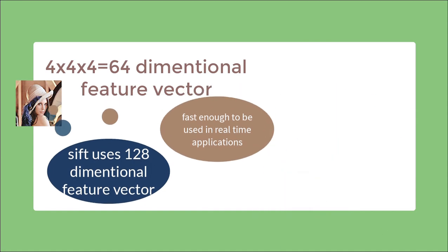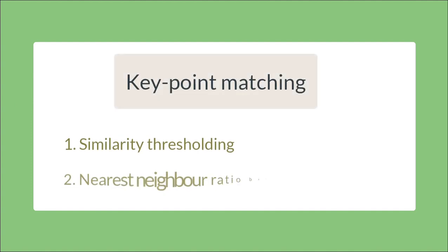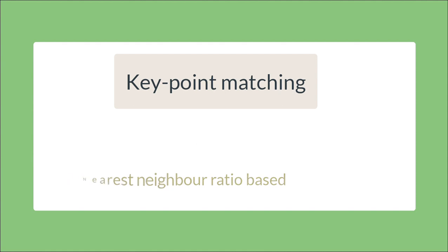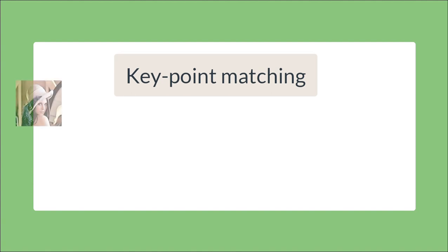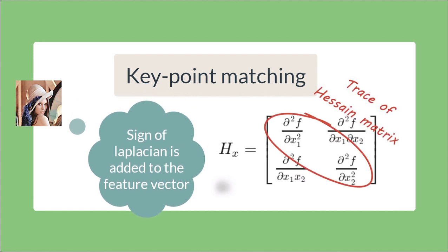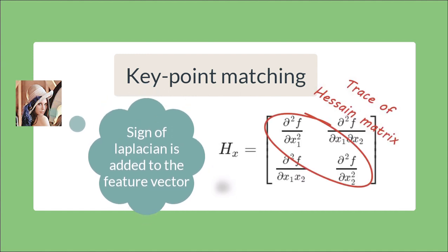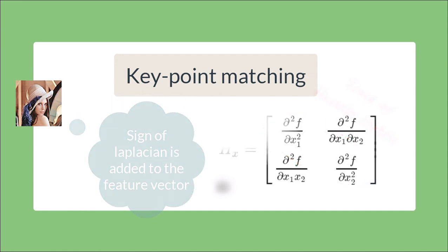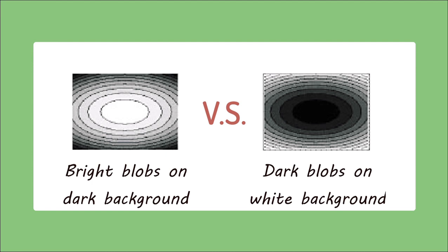After obtaining the key point description, these key points are matched by methods like similarity thresholding, and one based on the nearest neighbor ratio. In order to speed up the matching process, another feature is added for each key point. It is the sign of the Laplacian, which is nothing but the trace of the Hessian matrix previously computed. Laplacian distinguishes bright blobs on dark background from the reverse situation, and requires no extra computational cost. This speeds up the matching process by several times.